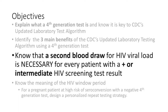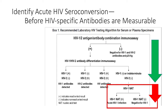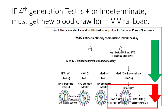A second blood draw is absolutely necessary to define what's going on with this patient if the fourth generation test is positive. Any time you have any test result besides absolutely negative on that first fourth generation test, you're going to want to know what that viral load is — so that's what you order across the board.